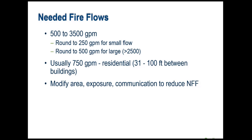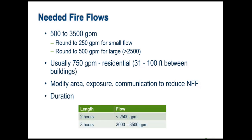Another criterion is duration — the length of time the fire flow must be sustained. If storage tanks have limited capacity the water may run out quickly. The general rules of thumb are: under 2,500 GPM requires two hours of sustained flow, and between 3,000 and 3,500 GPM requires about three hours. These numbers are being re-evaluated because they require a lot of storage, and some utilities question whether they are appropriate, but they're what has traditionally been used.